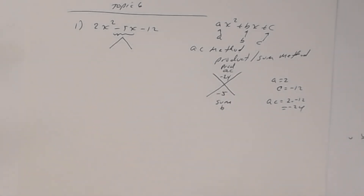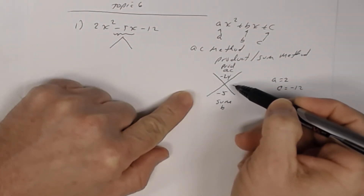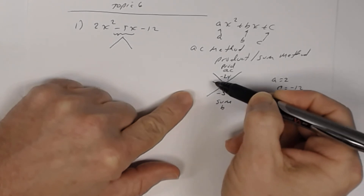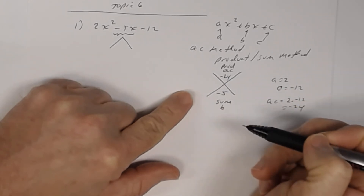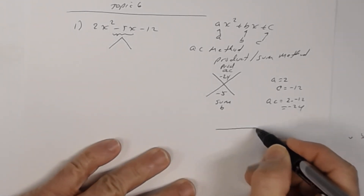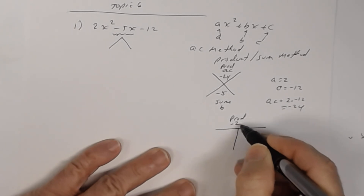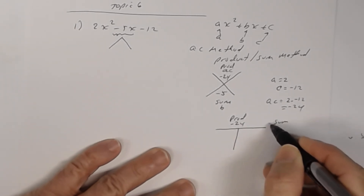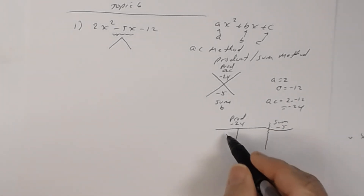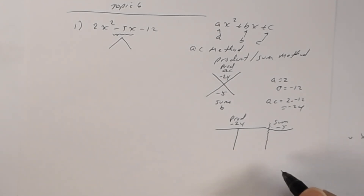I want the sum to be negative 5. The idea is to find two numbers whose product is negative 24 and whose sum is negative 5. You can use a table to help yourself think about this — put the product as negative 24 and the sum as negative 5, then find two numbers that satisfy both conditions.